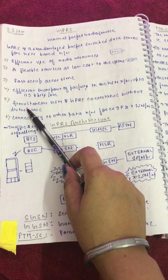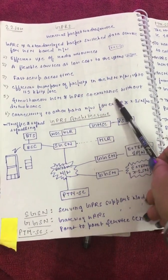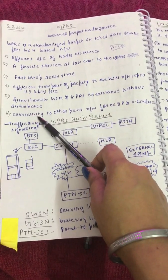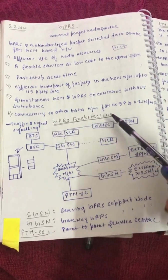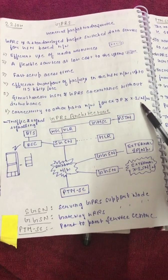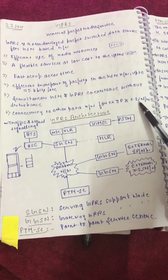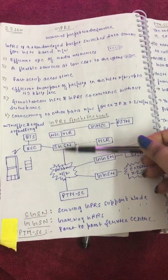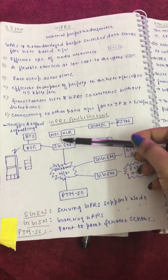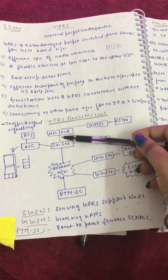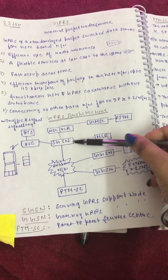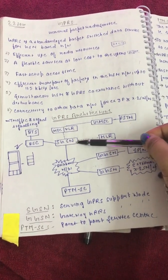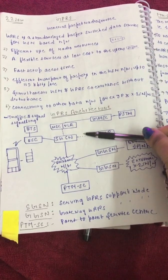Fifth is simultaneous GSM and GPRS coexistence without disturbance. Sixth is connectivity to other data networks, for example IP or X.25 networks. The main architecture features are SGSN and GGSN. SGSN is Serving GPRS Support Node.